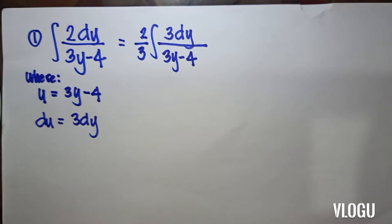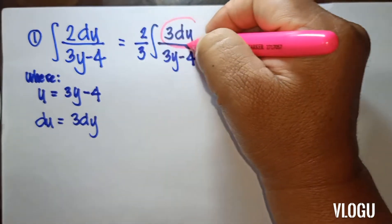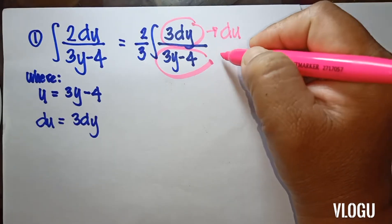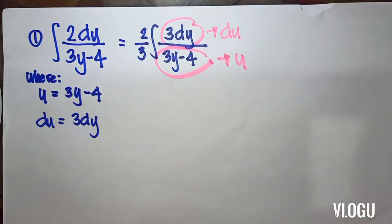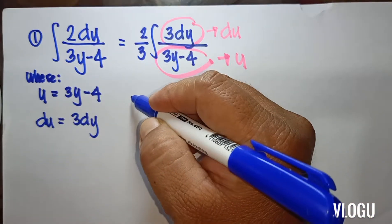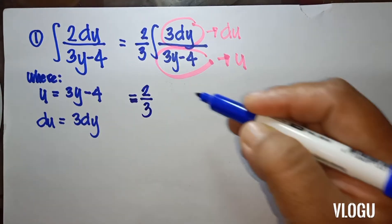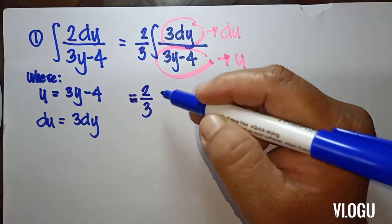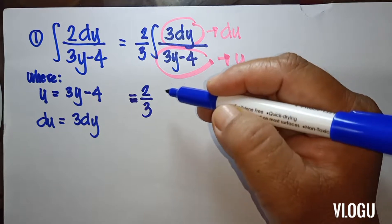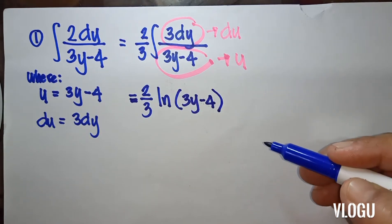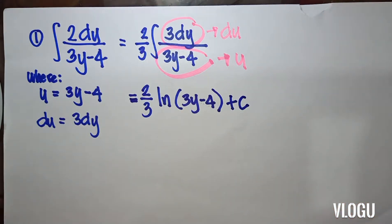So 3dy is our du, and 3y minus 4 is our u. We now have the form of the integral of du over u. Proceeding to the formula, we get two thirds ln of 3y minus 4 plus C. This is our final answer.